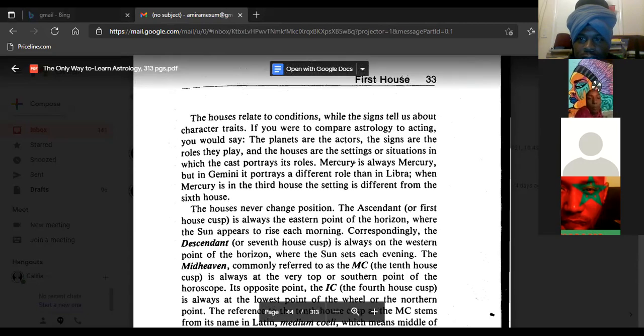The houses relate to conditions, while the signs tell about character traits. If you were to compare astrology to acting, you would say the planets are the actors, the signs are the roles they play, and the houses are the settings or situations in which the cast portrays its role.